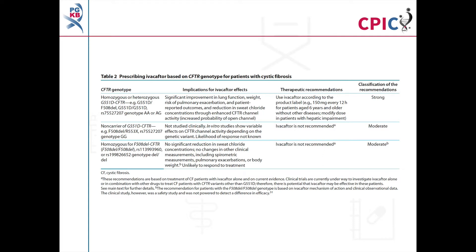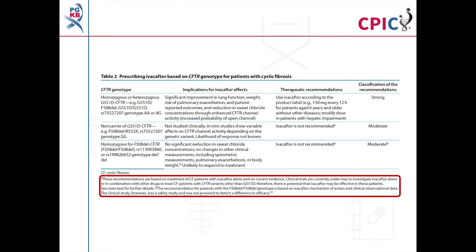The dosing recommendations for Ivacaftor can be found in Table 2 of the guideline. Detailed footnotes pertaining to the recommendations can be found at the bottom of this table. Please note that these recommendations were originally published in 2014 when Ivacaftor was only approved for patients 6 years and older carrying the G551D allele. Subsequent FDA approvals have broadened these recommendations to patients aged 2 years or older who carry any of the 33 approved CFTR class 3 variants detailed in the supplementary information of this guideline.